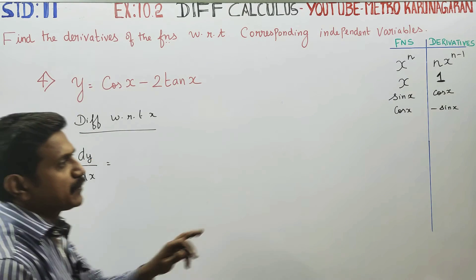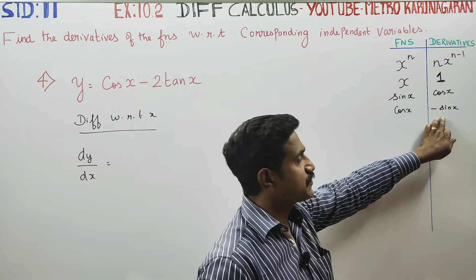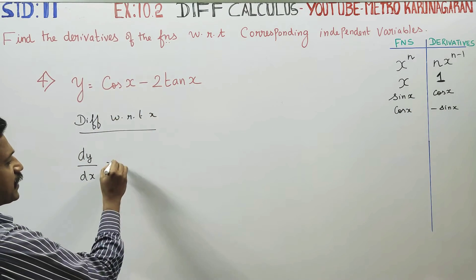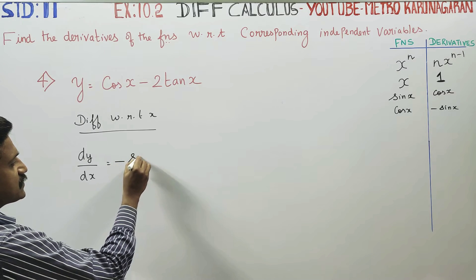Cos x kaag differentiate pannu, readymade formula arukku. Cos x kaag differentiate pannu, your answer is minus sin x. Thaniya plus minus loandu, thani thaniya differentiate pannu. Minus sin x is your answer.